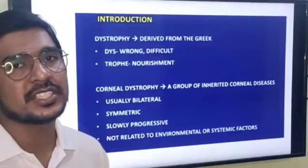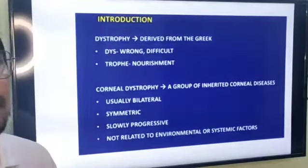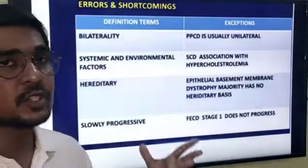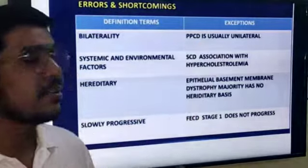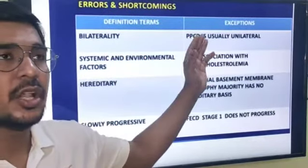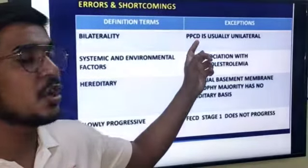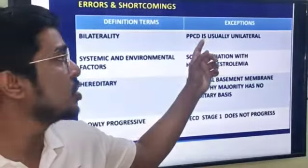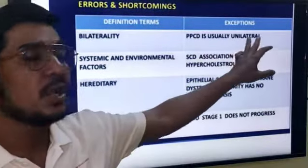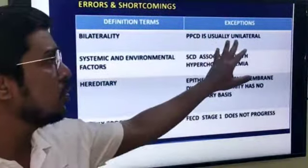There are exceptions in medicine and biology. For bilaterality: there is one condition called PPCD — Posterior Polymorphous Corneal Dystrophy — which is a type of endothelial dystrophy that is usually unilateral. It may be bilateral, but usually it is unilateral, making it an exception to the bilateral rule.